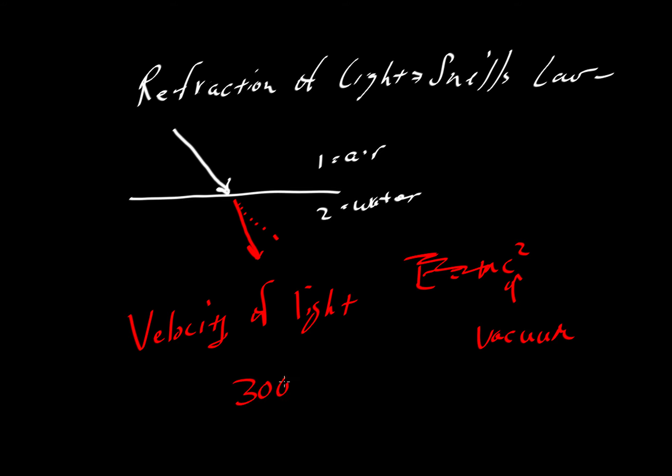And that speed of light is a constant at 300,000 kilometers per second. It is also an upper speed limit. Nothing can travel faster than the speed of light in a vacuum. But light can actually travel at slower speeds. Let's clear the chalkboard.